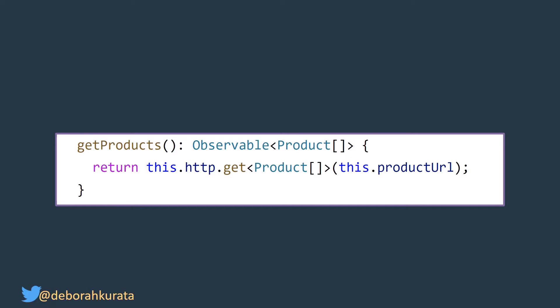Here's some code. We've probably seen this kind of code a gazillion times — it's in the Angular documentation and pretty much all the sample apps. We have some kind of method like getProducts. It returns an observable that's going to emit an array of products — that's what that generic syntax is. It returns the response from the HTTP GET, and that generic parameter specifies that when it receives the response back from the backend server, it should map it to an array of items matching your product interface.